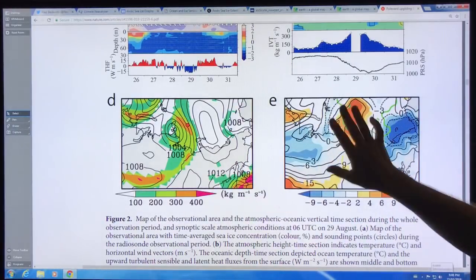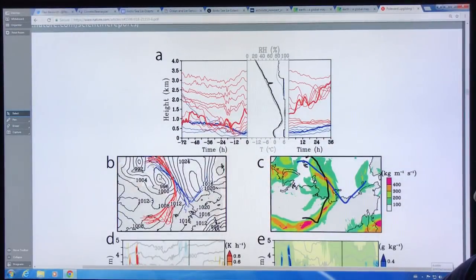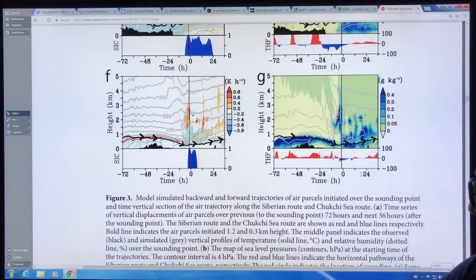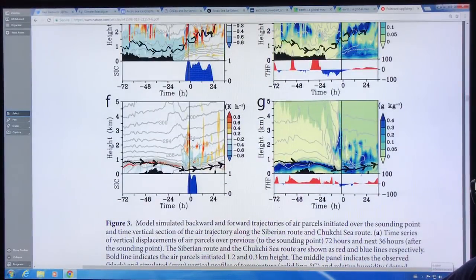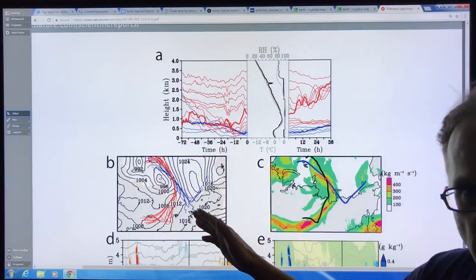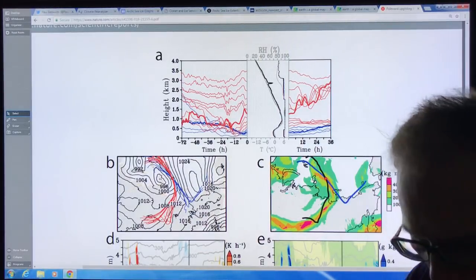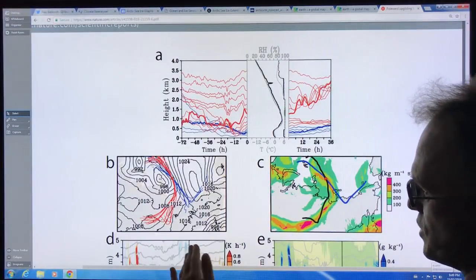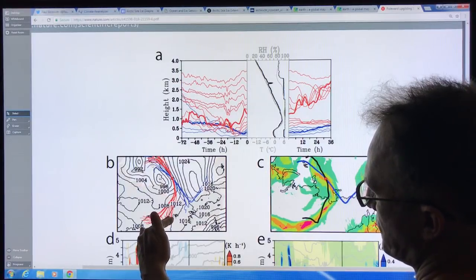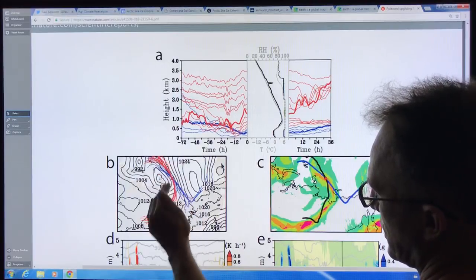This is some data and modeling showing what's going on. What they saw was that air was coming in over the sea ice from two different regions. There was warm, humid air coming from over the land of Siberia, going over the open water, then going over the ice. This was the trajectory, this was a point where they sampled data.